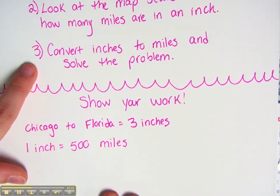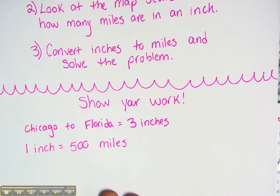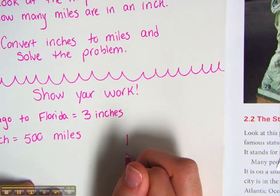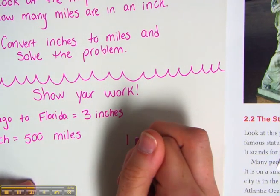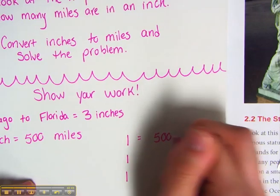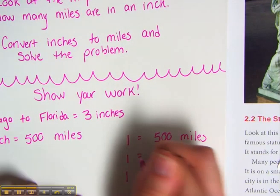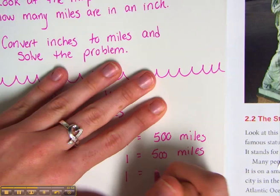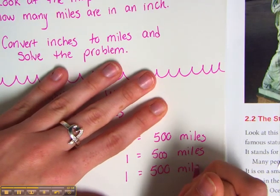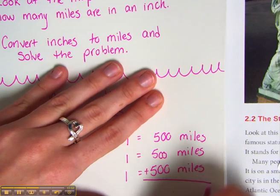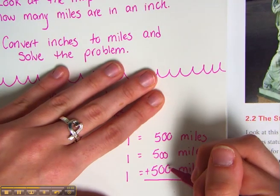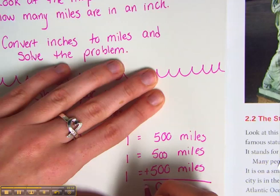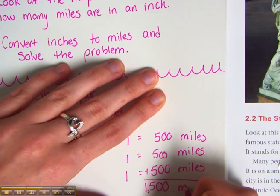I'm ready to look at number three — convert the inches to miles and solve the problem. I know that Chicago to Florida is three inches, and it's easiest to keep track with tallies. So I'm going to write one inch, two inch, three inches. Now each inch, remember, is 500 miles. Don't forget your unit — 500 miles. All I have to do is add these up. 0 plus 0 plus 0 is 0. Again, we have the 0. 5 plus 5 plus 5 is 15. 1,500 miles is my answer.